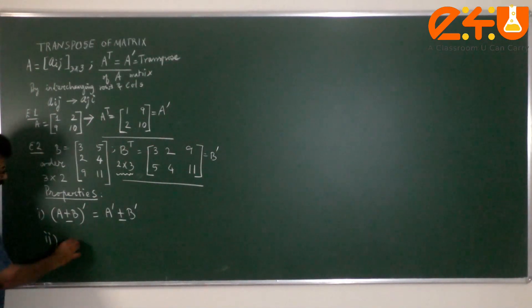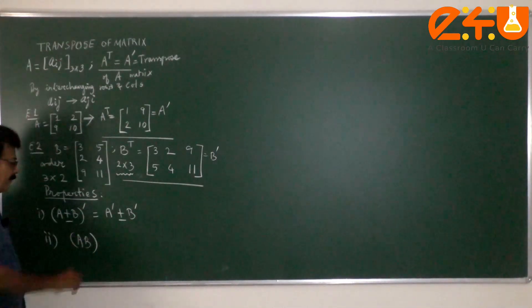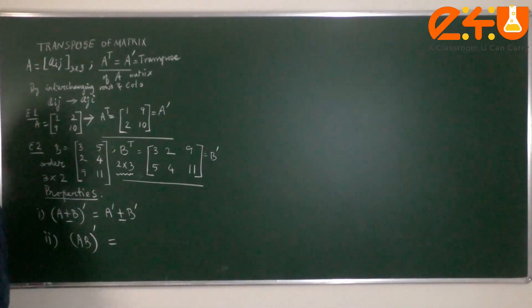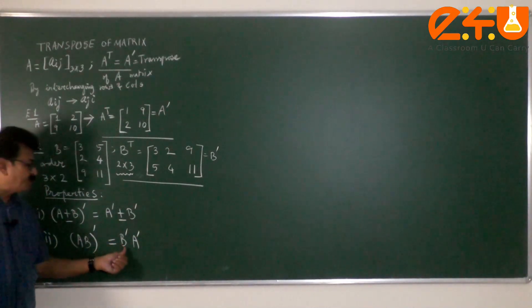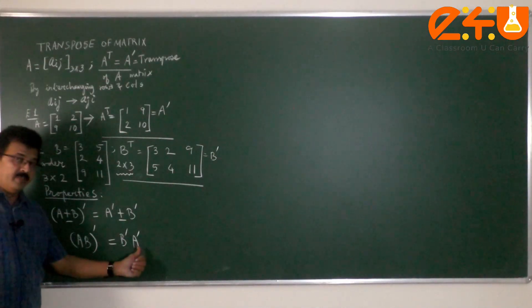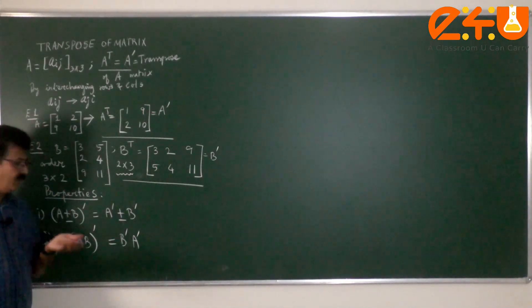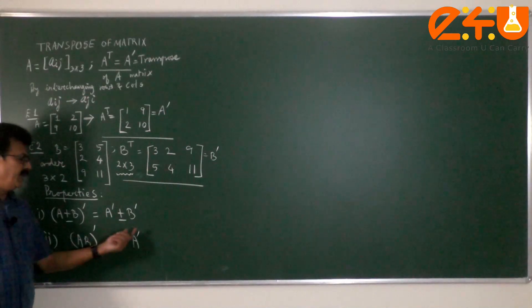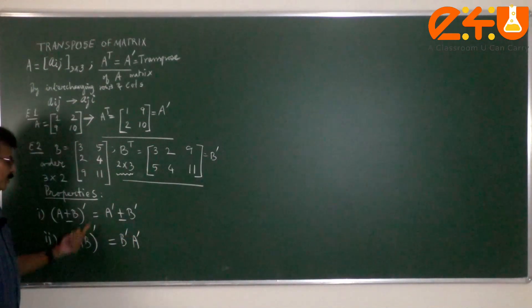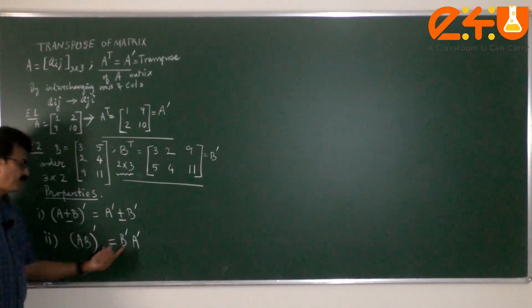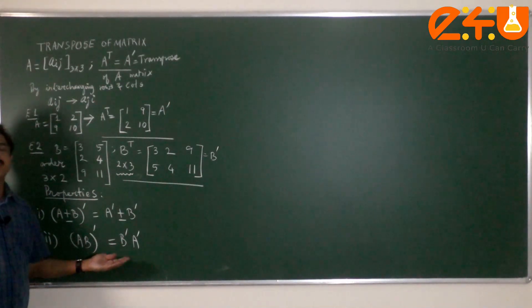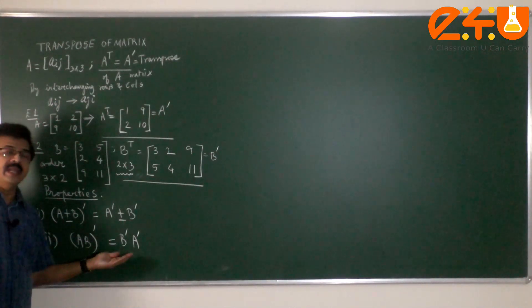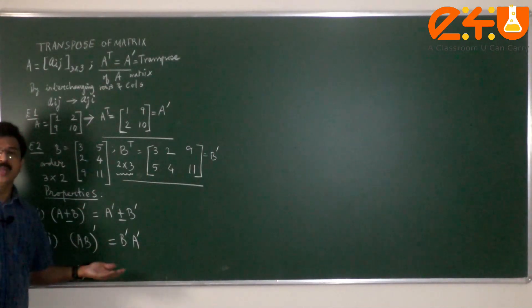The other one is multiplication. When two matrices are multiplied and you want to take the transpose of the product, then the individual products of transpose of B, transpose of A in that order. Because we know there is some kind of criterion to be satisfied when there is a product of matrices done. AB whole transpose becomes B transpose A transpose and not in the same order of A transpose B transpose.